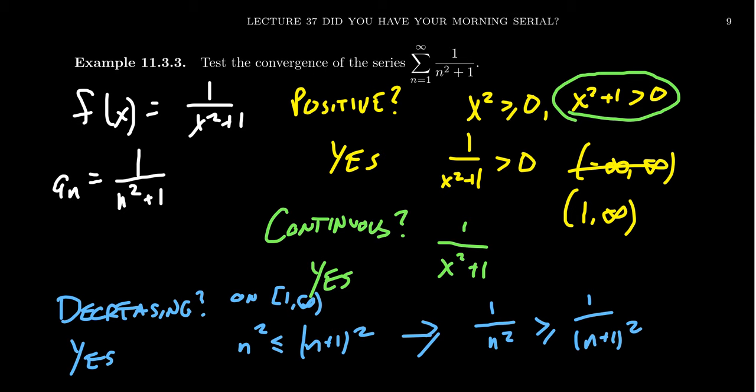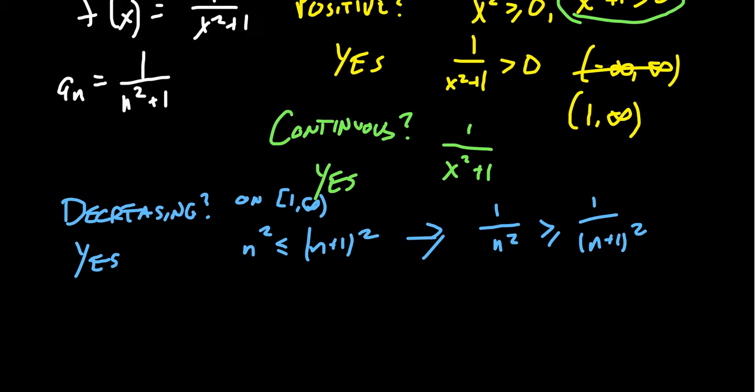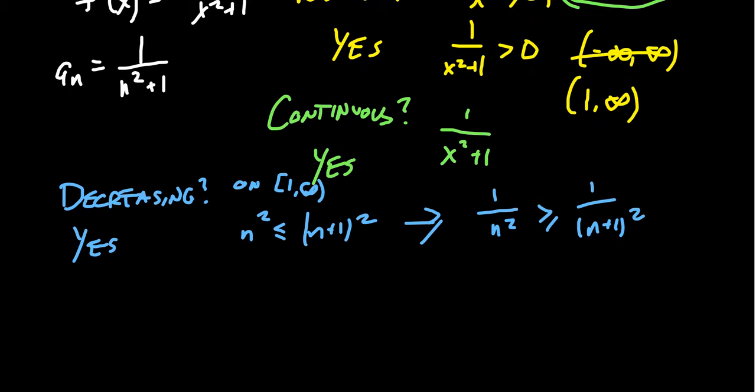But the function, we also get that it's decreasing. You could use the derivative to help you out here if there's any concern whatsoever. But since our function is positive, continuous, and decreasing, what we can do is we can see that our series will be convergent if and only if the integral is convergent. So we want to look at the improper integral 1 to infinity of the function 1 over x squared plus 1 dx. And now with this integral, we can use the fundamental theorem of calculus.